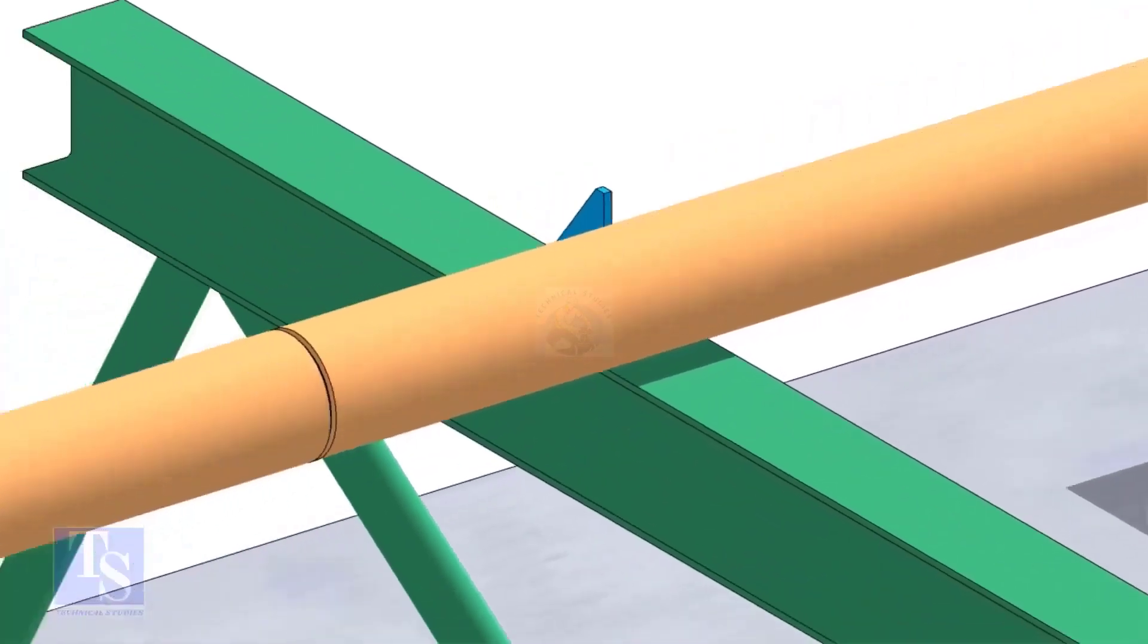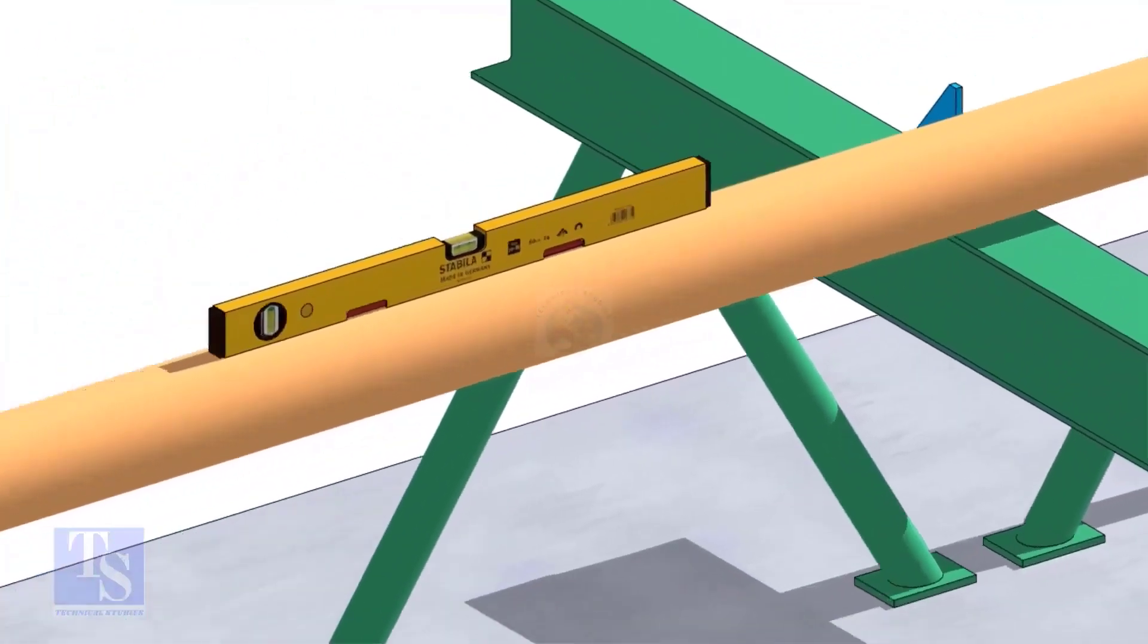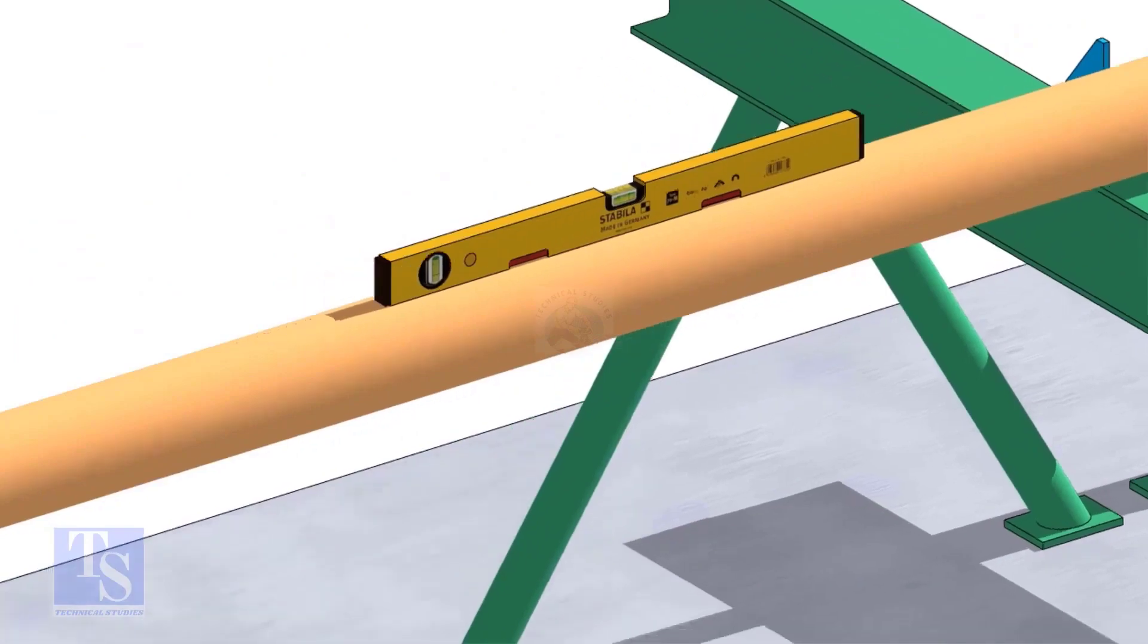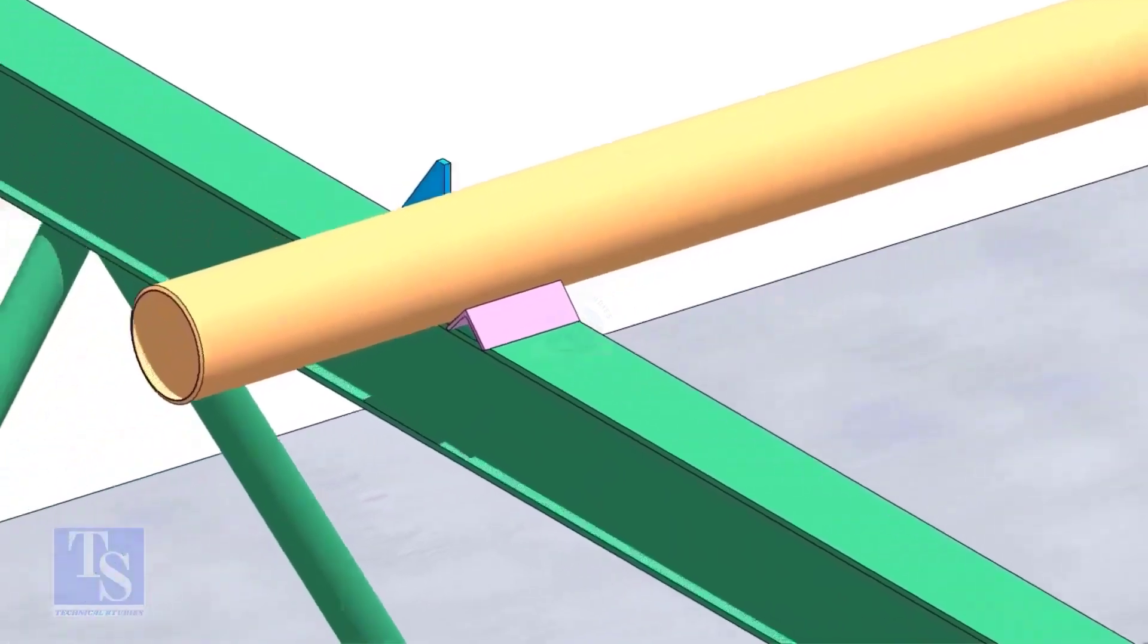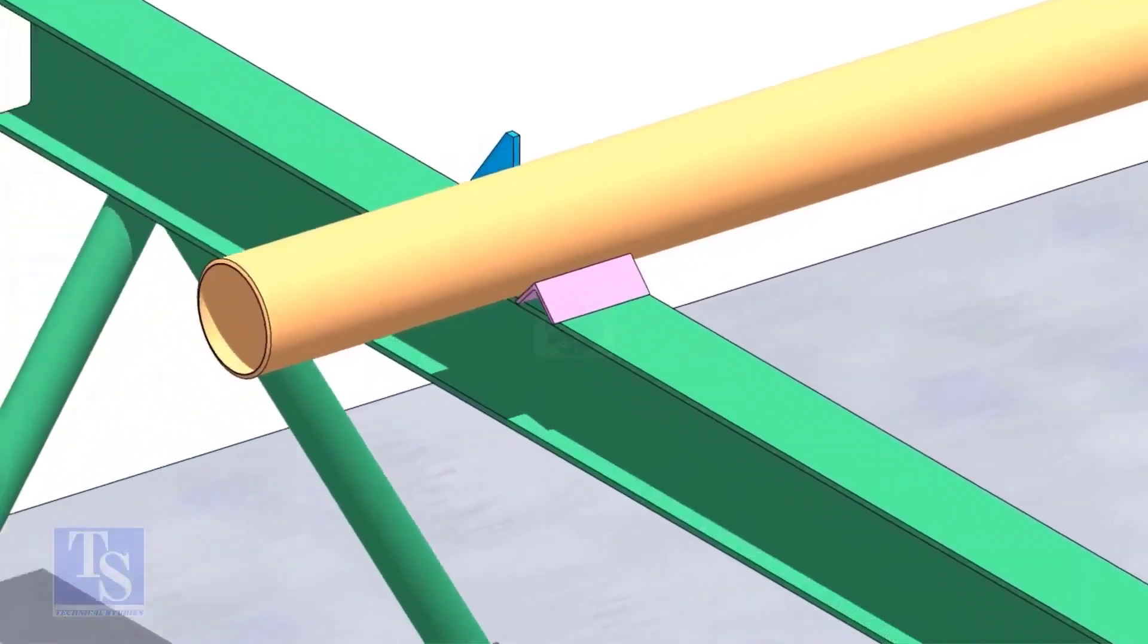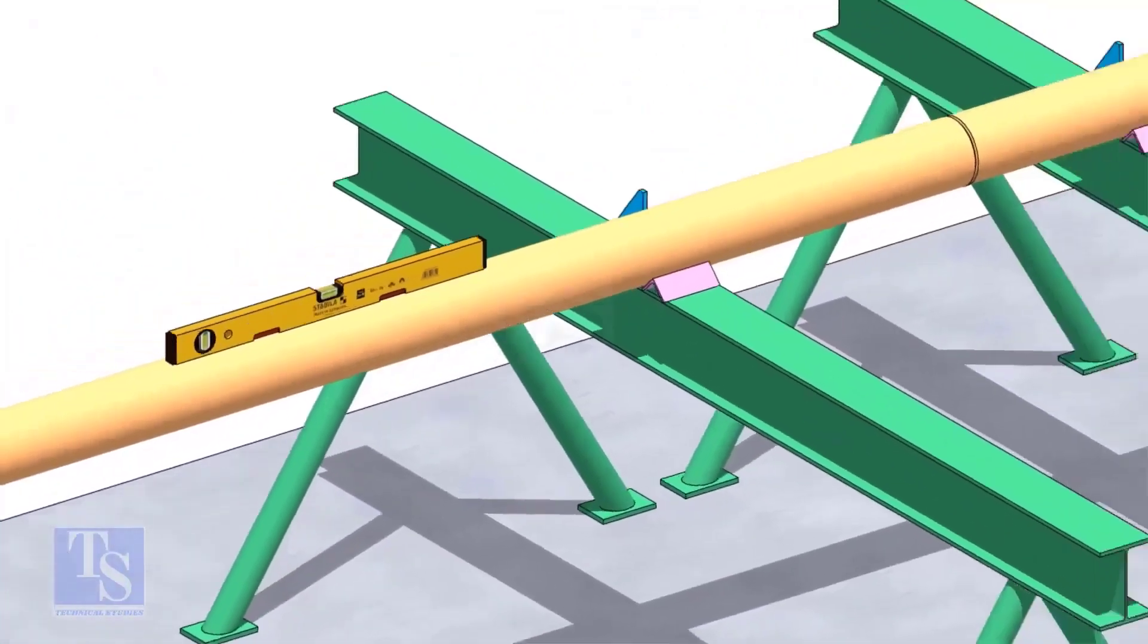You can cross-check the level of the pipes. Arrest the pipes from the other side, using wedges or angle stubs.